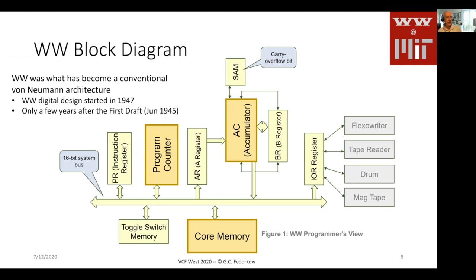The block diagram for the machine in modern terms looks surprisingly conventional. It was a von Neumann architecture, even though Mr. von Neumann had only published his first draft in June of 1945. The machine used what you might think of as a simple load-store architecture, centered around an accumulator and core memory with a few other registers — program counters, I/O registers. The ALU was a 16-bit ALU, with a second 16-bit register for overflow and underflow from operations like multiply and shift.